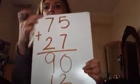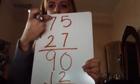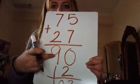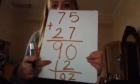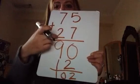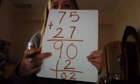Okay, so when we're doing partial sums, we always start with the tens. So 70 plus 20 equals 90, and then we add our ones: 5 plus 7 equals 12. And then we add the two together. This is the partial sums method.